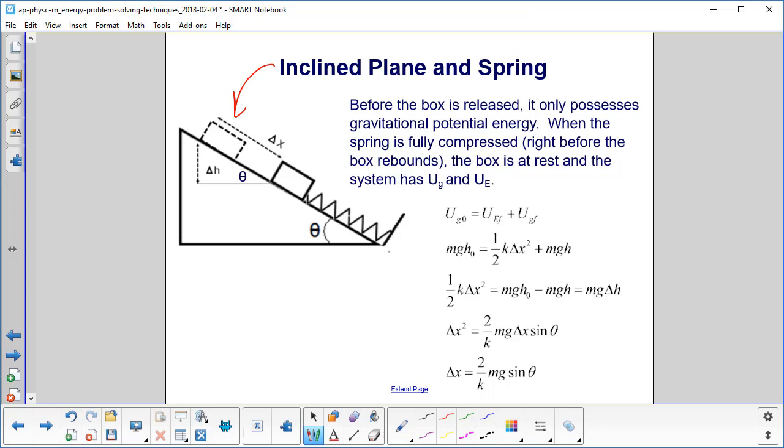When the spring is fully compressed, right before it might rebound a little bit, the box is at rest, and the system has gravitational potential energy and elastic potential energy. So let's look at what we have.